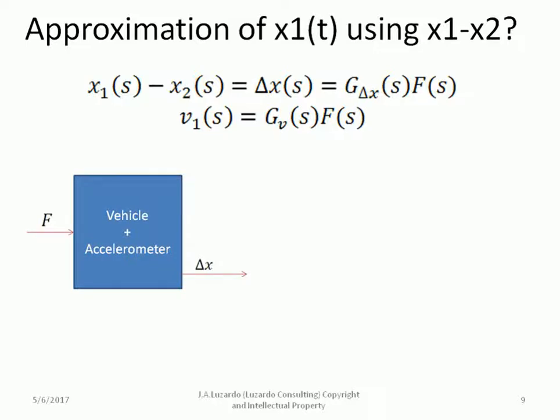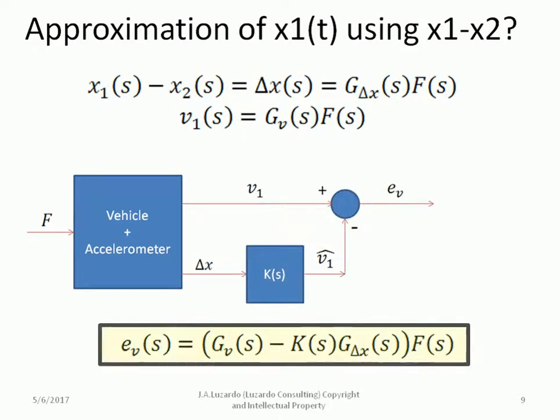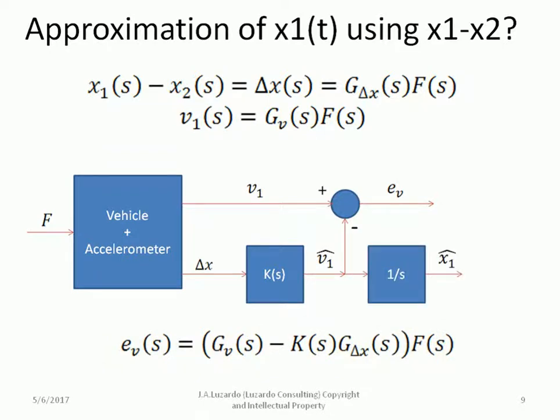Here we have a graphical representation of our system. The input is F and the output is the spring deflection, delta x. To get an estimate of the vehicle velocity, we need to condition the output delta x with a filter as shown in the figure. V1 hat is the estimate of V1. We can determine the estimation error by comparing the real value of V1 with its estimate. EV is the estimation error given by the equation on the bottom of the slide. Finally, an extra integrator is used to integrate the velocity estimate to obtain the position estimate of the vehicle.